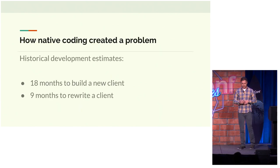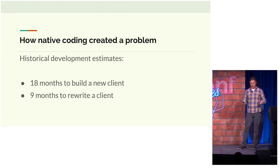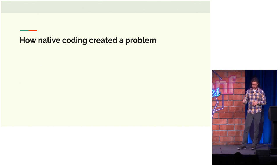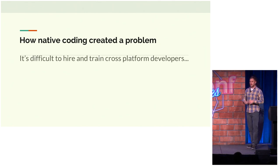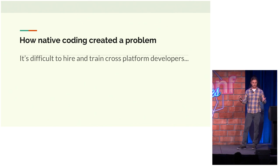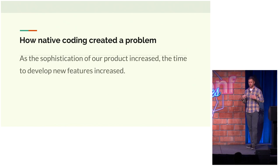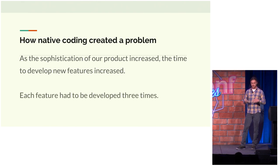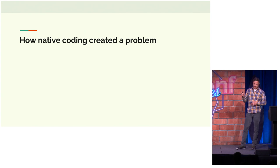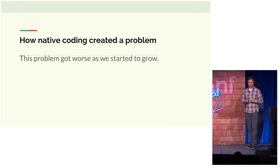But this did create a problem for us. For each client we built, it took us about 18 months to build. And when we did those rewrites, it took us about nine months. On top of that, it's very difficult to hire and train developers on iOS and Android, especially if you're trying to cross-train them. So our solution was to build engineering teams for iOS, Android, and for web. As our product got more sophisticated, the time to develop new features increased, and we were developing those features three times. This problem just continued to get worse as we started to grow.